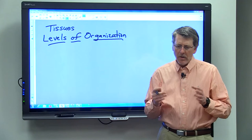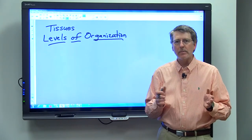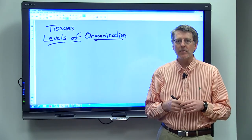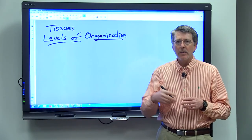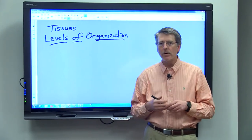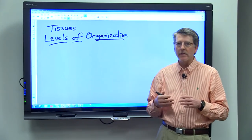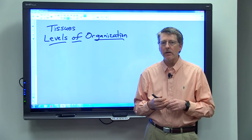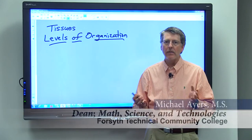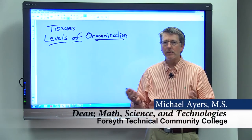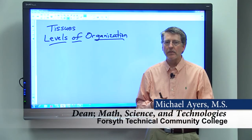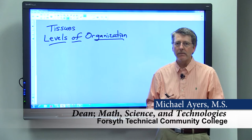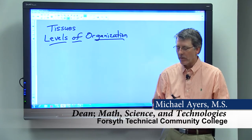When we talk about animal tissues, we'll be looking at the cells that the tissues are made of. But you also want to think forward to the organs. We'll talk about some organs in particular and how the different tissues come together to make an organ, and then what the purpose of that particular organ is.